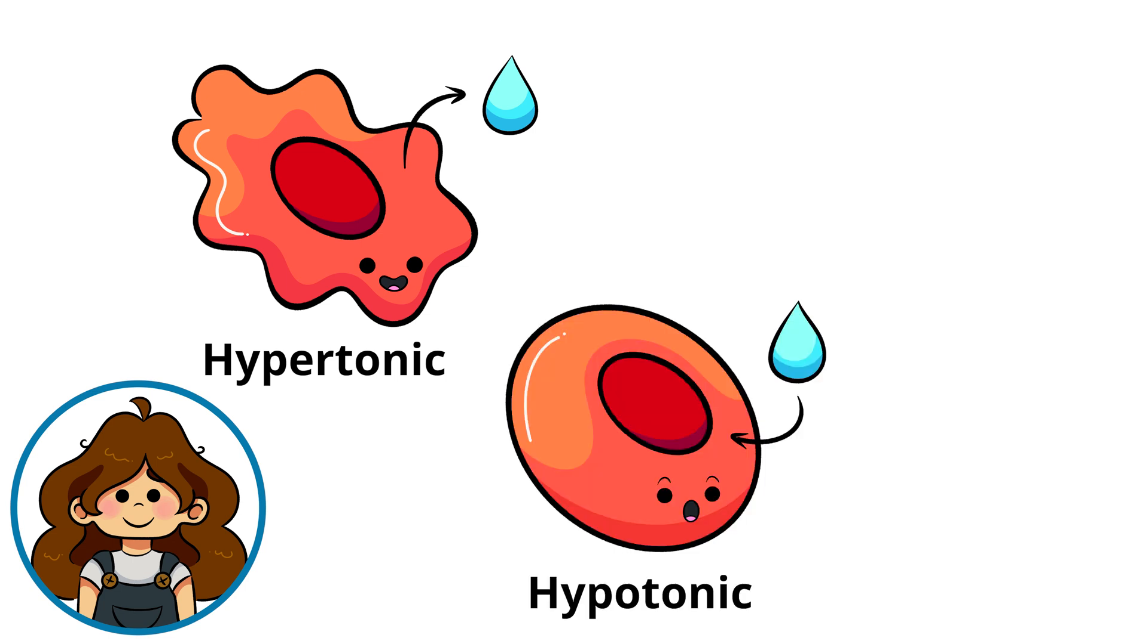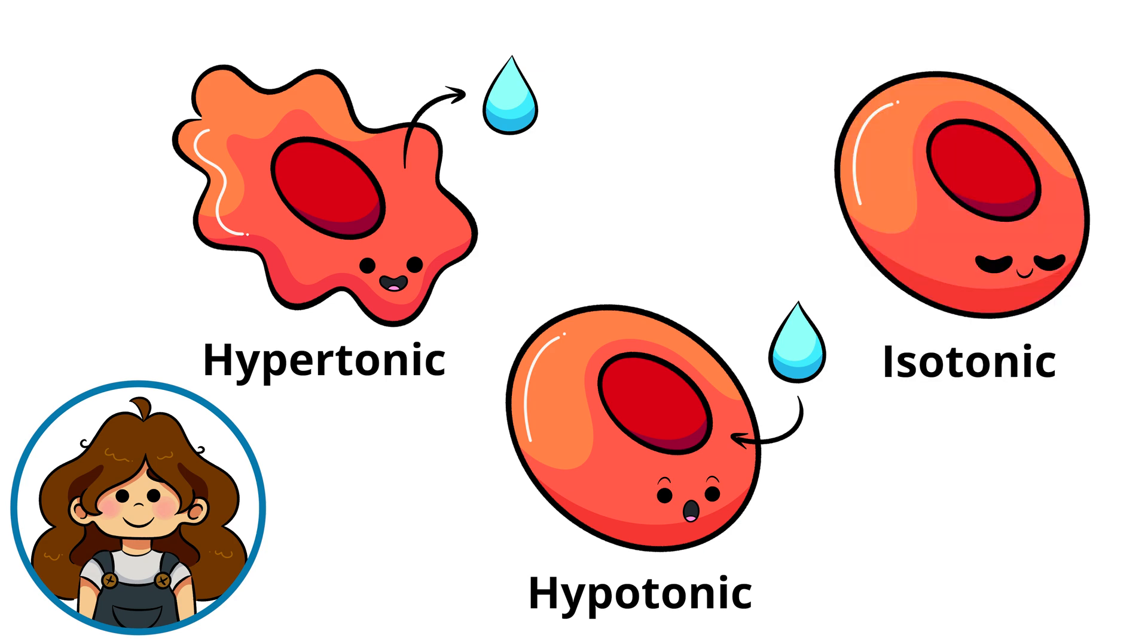Second is hypotonic, where the outside solution has fewer solutes than inside the cell, so water moves in causing the cell to grow. Third is isotonic, where the concentration of solutes is equal inside and outside the cell, so water moves in and out at the same rates.